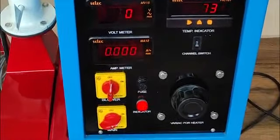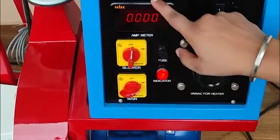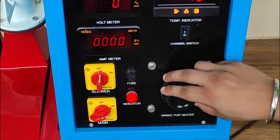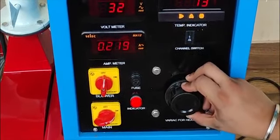This is the control panel. This is the mains. This is on off of the mains. This is volt meter, ampere meter and temperature indicator. We can control the voltage of the heater from here. You can see.